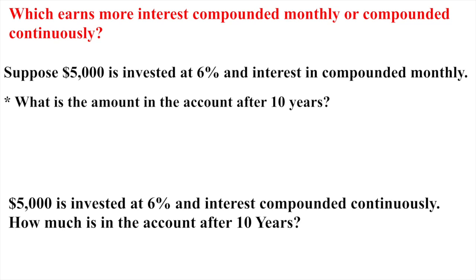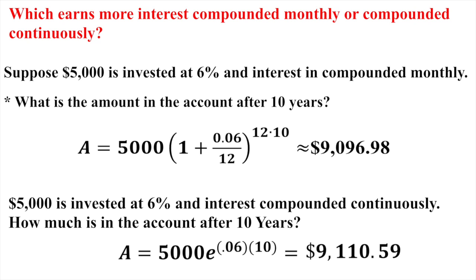Which is better — compounding monthly or continuously? Work both problems and compare. You will find that compounding continuously does give you more money than monthly, daily, or every second. This is the power of Euler's number e — it allows us to model continuous compounding, giving us the best possible return.